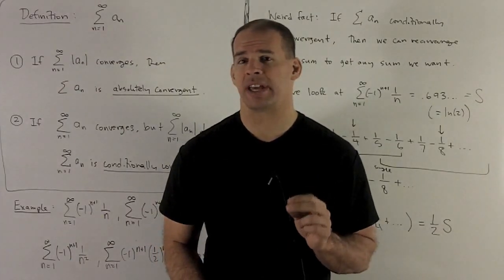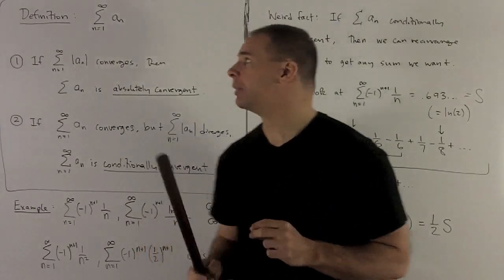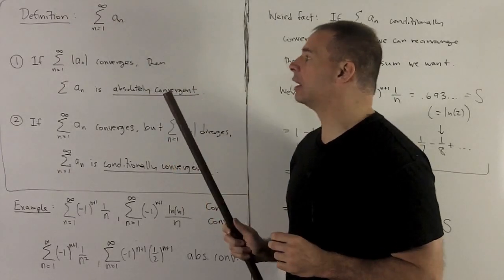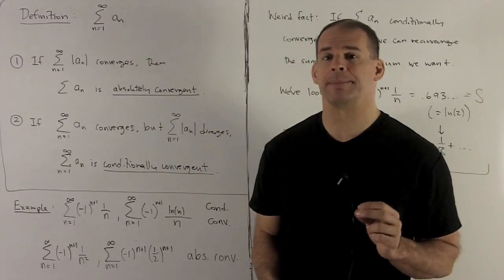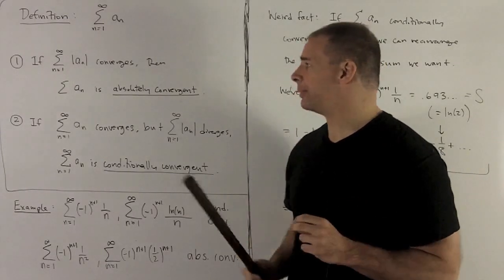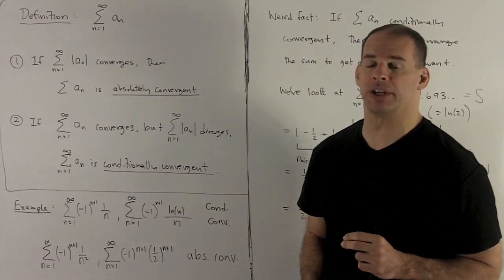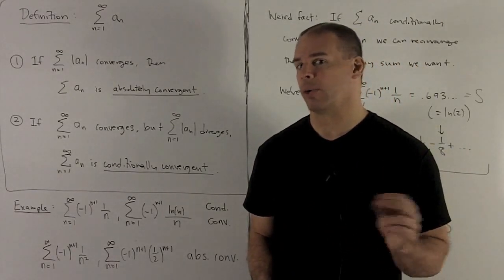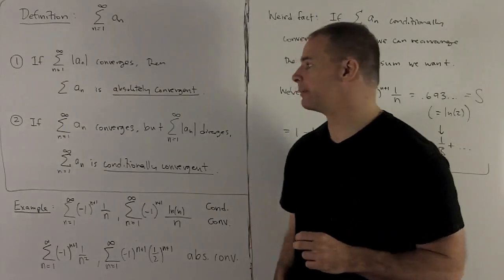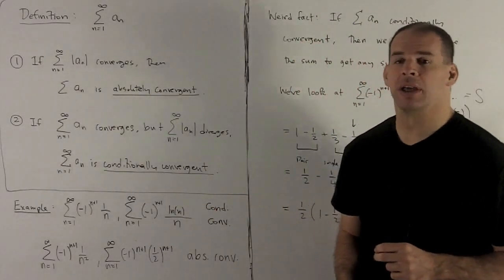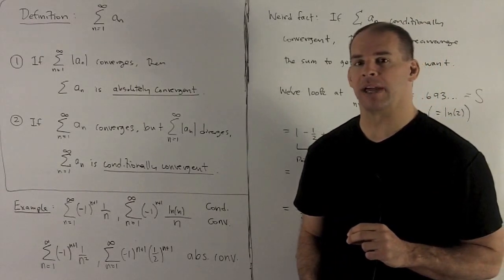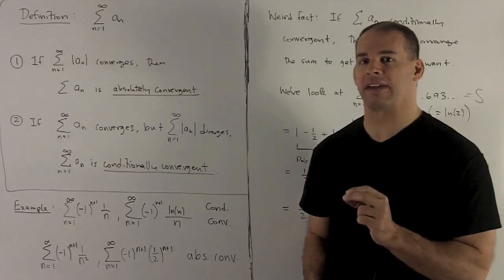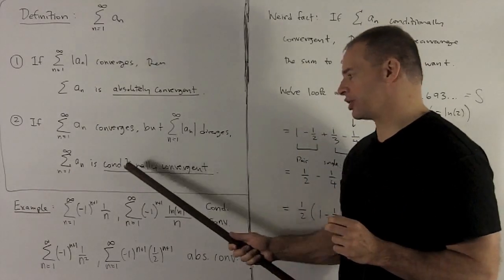The absolute convergence test leads us to the following definitions. We're going to have a series for a sub n, could be positive or minus values in here. If I take the series for the absolute value of a sub n, that converges, then we're going to say that series for a sub n is absolutely convergent, which means it will converge whether you have the signs in there or not. If the series for a sub n converges, but the series for absolute value a sub n diverges, meaning I throw away the signs and then suddenly I change from converging to diverging, then we'll call that conditionally convergent.